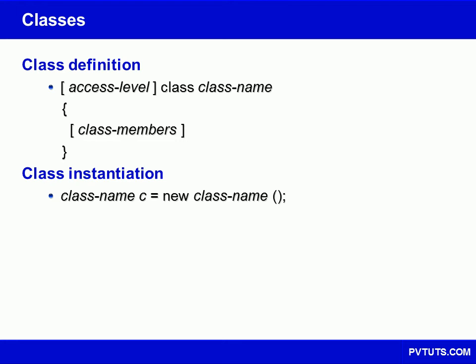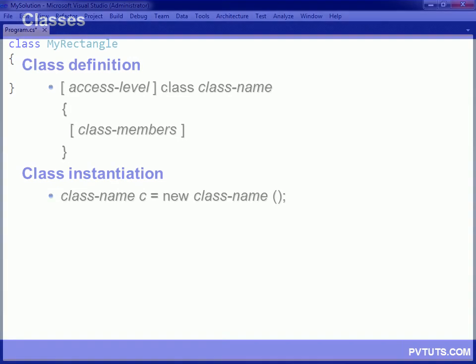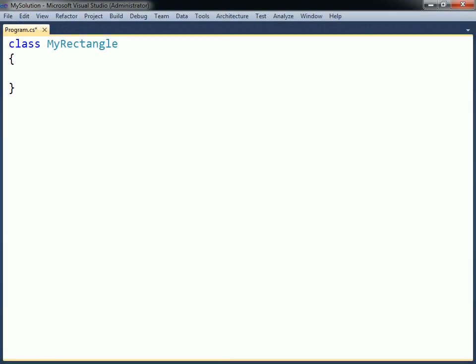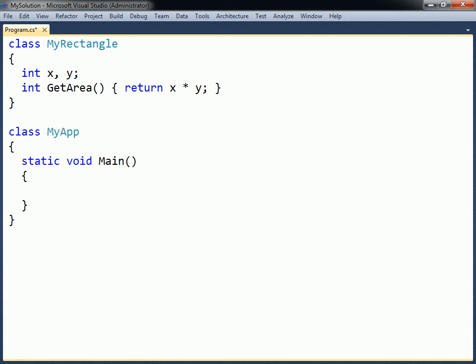A class is a template used to create objects. They are made up of members, the main two of which are fields and methods. Fields are variables that hold the state of the object, while methods define what the object can do. To use a class as members from outside the defining class, an object of the class must first be created.